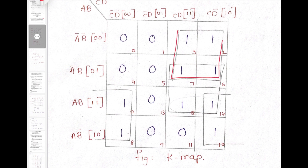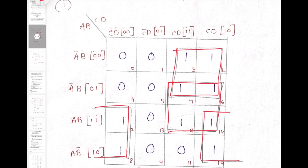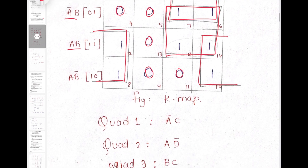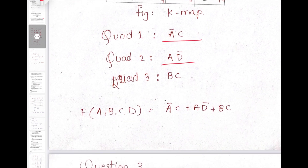When we look at the K-map, three groups are forming, so we have to write the reduced expression for all three groups. K-map design is very important. Since it is SOP form, we have to write A, B, C, D in the form of minterms. The remaining cells must be filled with zero — this is also very important. The expression for group 1 is A̅C, group 2 is AD̅, and group 3 is BC. So the reduced expression will be A̅C + AD̅ + BC.